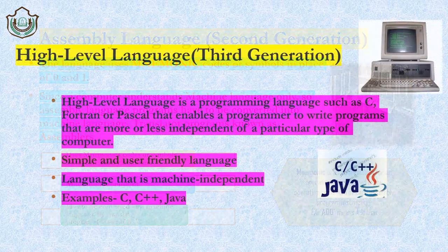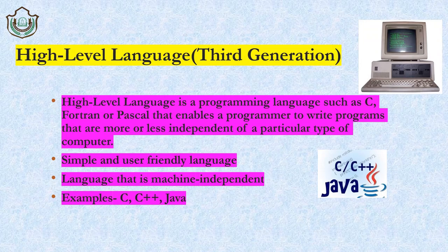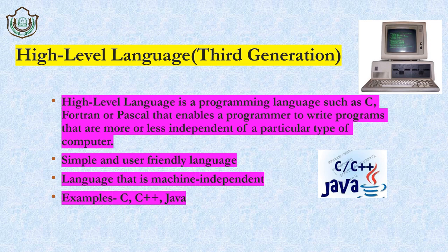Now let's move to the third language — high level language, also called the third generation language. High level language is very different from assembly and machine language. It uses high level programming languages such as C, Fortran, Pascal, C++, and Java to write programs. But again, the question arises: does the computer directly understand high level language? The answer is no — high level programs also need to be converted into machine language.